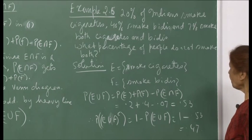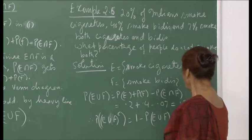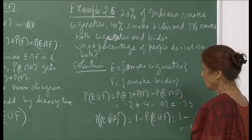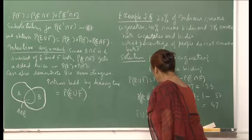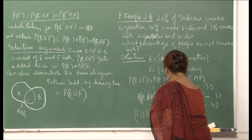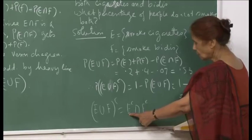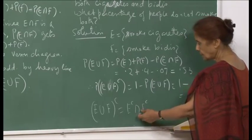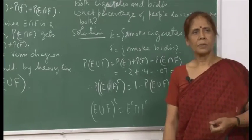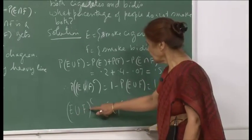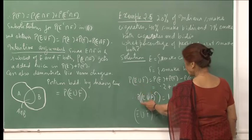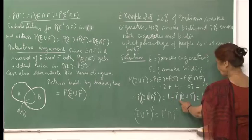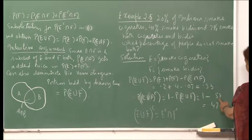I am looking for the percentage who do not smoke either. By De Morgan's law, (E ∪ F)ᶜ = Eᶜ ∩ Fᶜ, which is the set of people who smoke neither cigarettes nor bidis. Using proposition 2, P((E ∪ F)ᶜ) = 1 − P(E ∪ F) = 1 − 0.53 = 0.47.